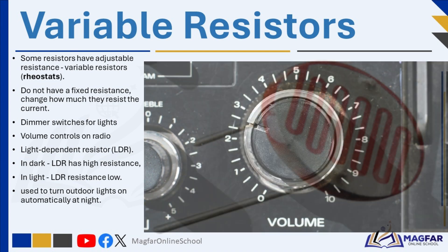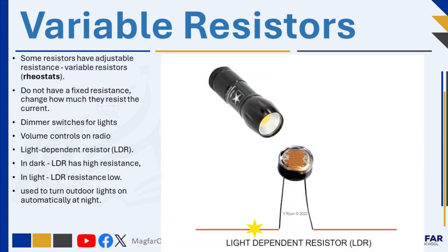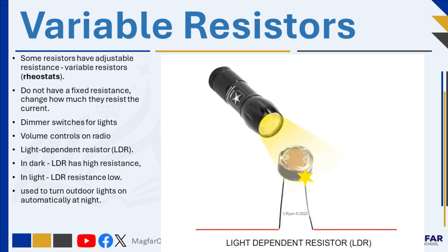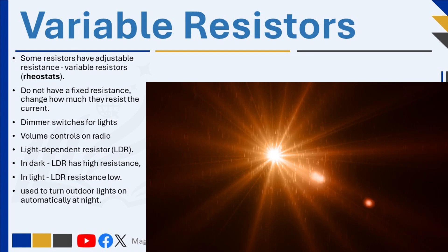Another special type of resistor is the light-dependent resistor, or LDR. Its resistance changes depending on how much light it receives. When it's dark, the LDR has high resistance, and when it's light, the resistance goes down. LDRs are often used to turn outdoor lights on automatically at night and off during the day.